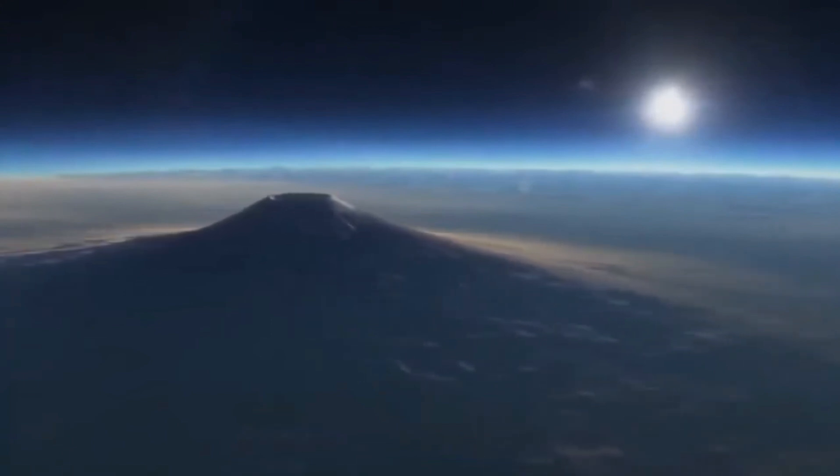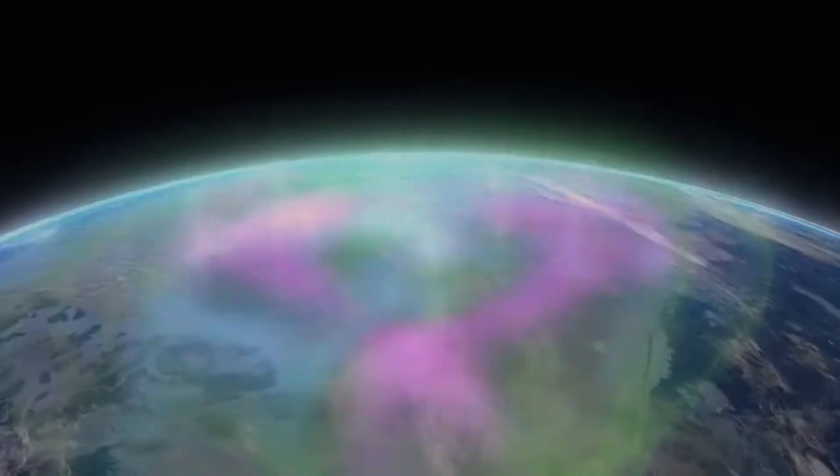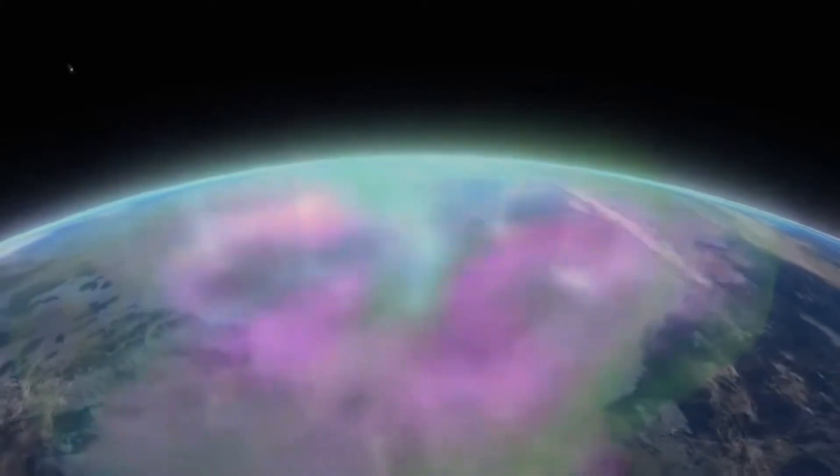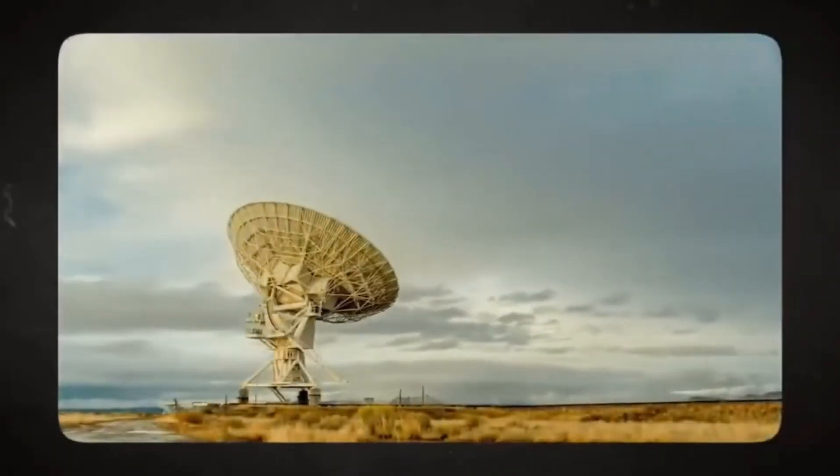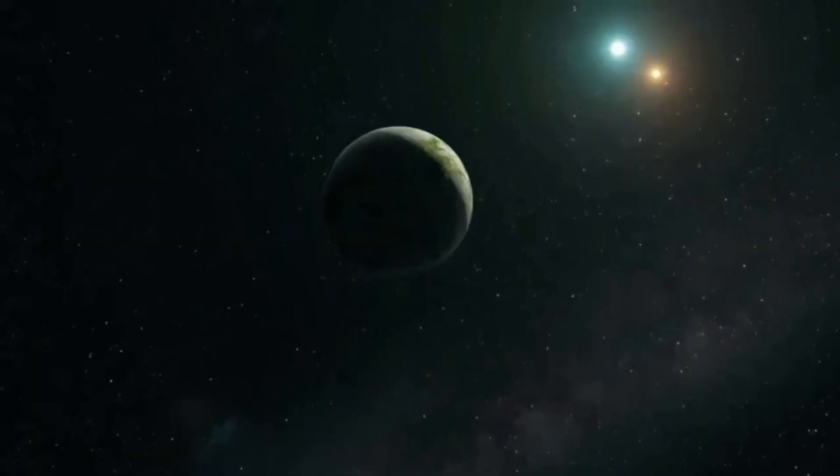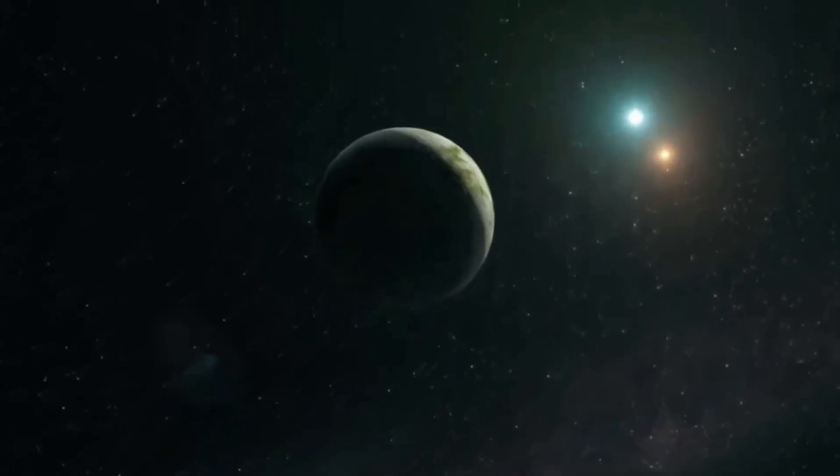As astronomer Ed Turner points out, though, just because something has an atmosphere doesn't mean life exists there. Like Venus, Proxima b may have a thick atmosphere and scorching temperatures. Even yet, the method proposed by Loeb and Kraidberg is still our greatest bet for getting a look at this habitable planet.